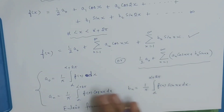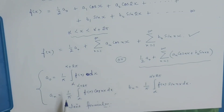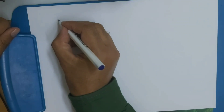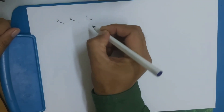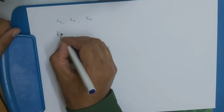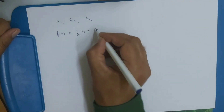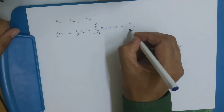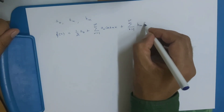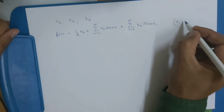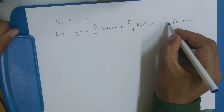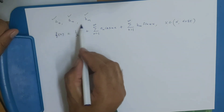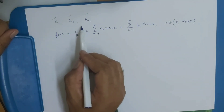जब भी हम question करेंगे, questions में होगा: find Fourier series. We want to find a_naught, a_n, and b_n — these Fourier coefficients and Euler's formulae. f(x) = (1/2)·a_naught + sigma n=1 to infinity [a_n·cos(nx)] + sigma n=1 to infinity [b_n·sin(nx)], interval α to α+2π, where x is the variable. These are the Fourier coefficients or Euler's formulae.